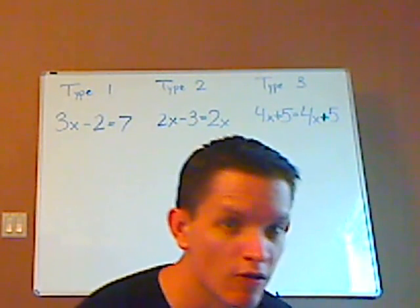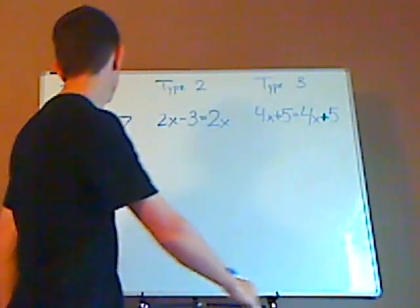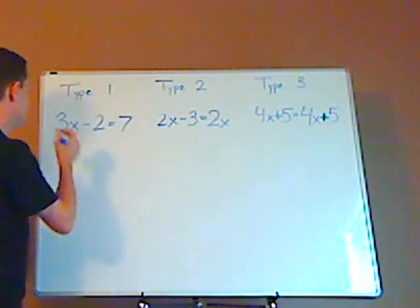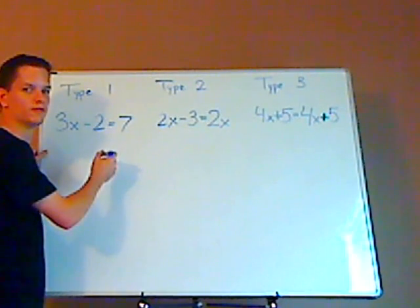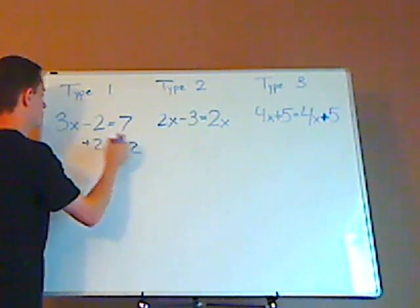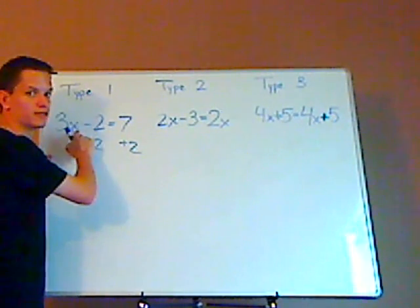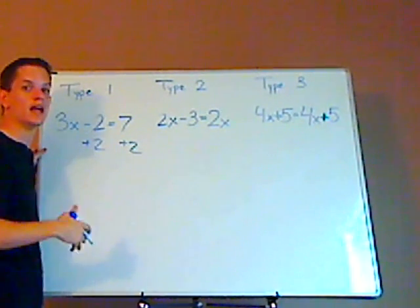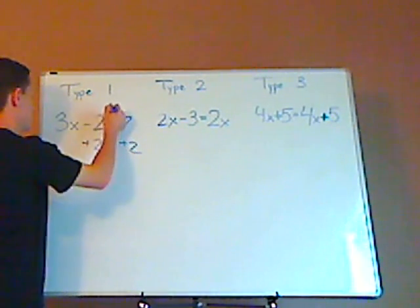All right, so hopefully you tried them. They're not that bad. All right, so the first one, what you're gonna do first is you're gonna add two to both sides. You wanna do the opposite, right? So it's minus two, so you would add two. So you add two to both sides,